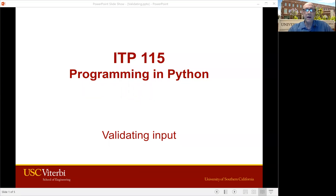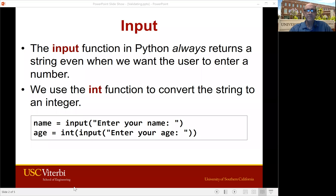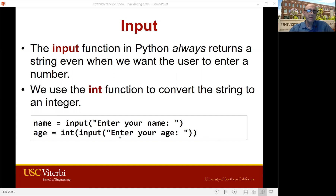This is ITP115, programming in Python, and I'm going to show you how to validate input. We've been doing input for a while. When you ask the user for something with the input command — enter your name — you always get a string back. Your name is a string, so that's fine. The next line, when we say enter your age and get input from the user, the user hopefully types a number, and then we convert that with the int command and turn that into the number age.